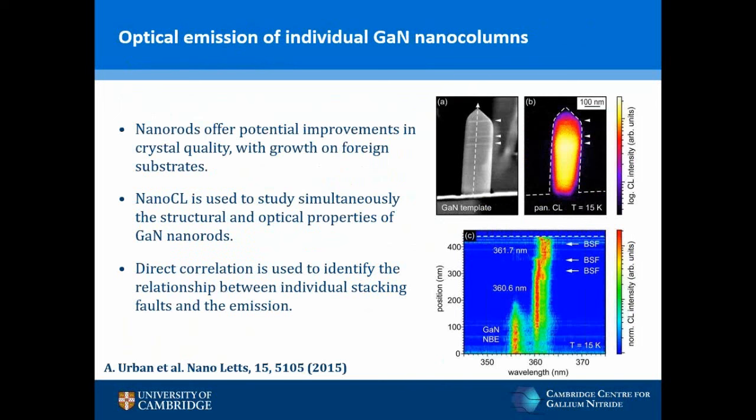To improve luminescent intensity, there is also an increasing movement towards the development of nanowires and nanorods, which offer potential improvements in crystal quality grown on foreign substrates. Nanocathodoluminescence offers an opportunity to study these nanostructures and correlate the optical and structural properties. In this study, Arne Urban, also working at Magdeburg, showed emission from individual gallium nitride nanowires and revealed direct correlation between stacking faults shown in the STEM image with emission of 5 nm longer in wavelength than the gallium nitride near band-edge, directly correlating the structural and optical characteristics of stacking faults in gallium nitride nanowires.